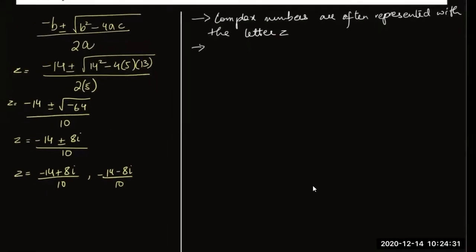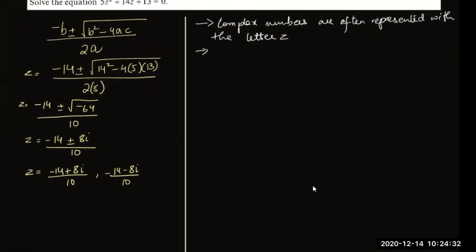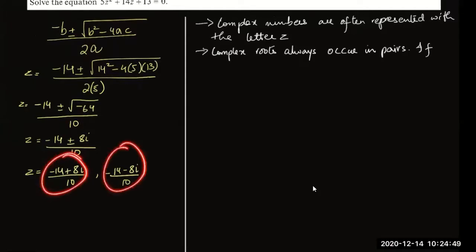An important point is that complex roots always occur in pairs. For example, if one root is minus 14 plus 8i, the other root is minus 14 minus 8i — the real part stays the same and the sign of the imaginary part changes.